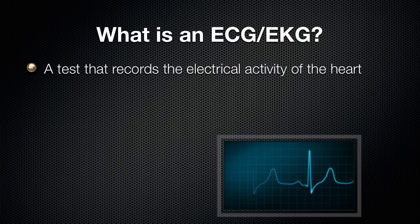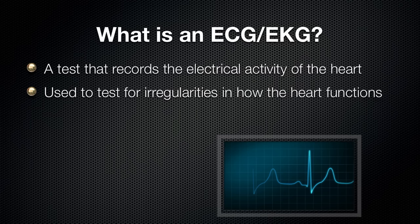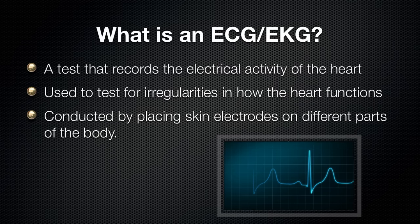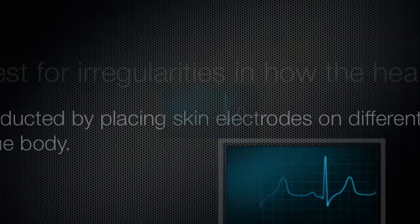Now the ECG is used to test for irregularities in how the heart functions. And you've probably either seen this firsthand in a hospital or on TV. You can look at the electrocardiogram and it will tell you if the heart is working the way it should. The way this is conducted is by placing skin electrodes on different parts of the body and these electrodes are able to detect the electrical activity of the heart.